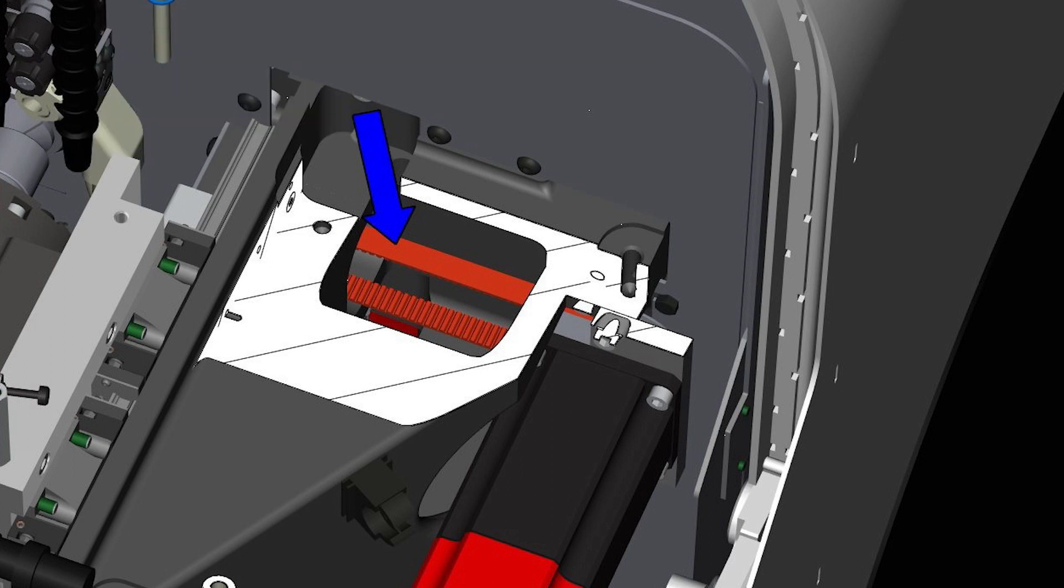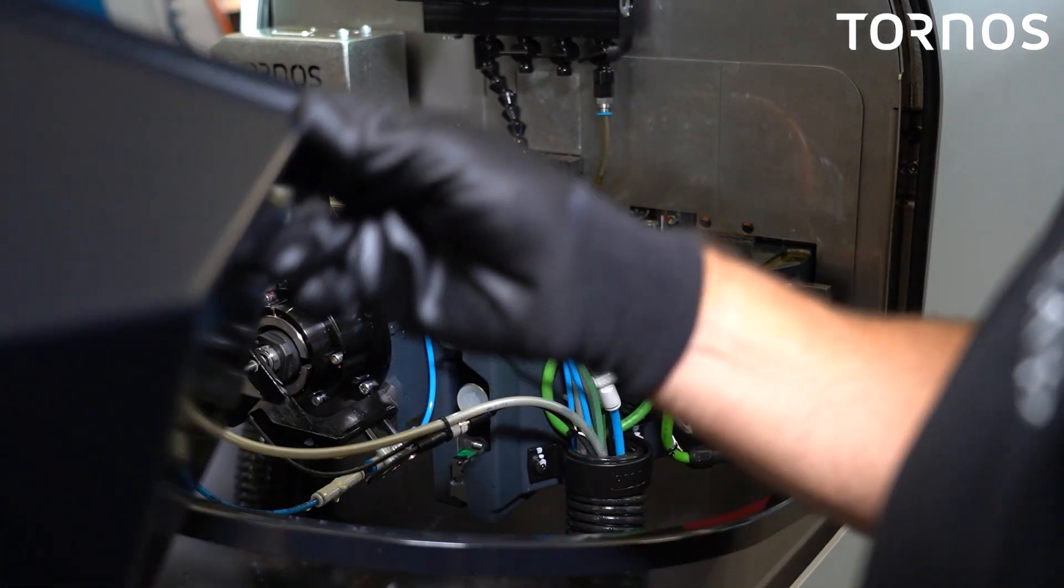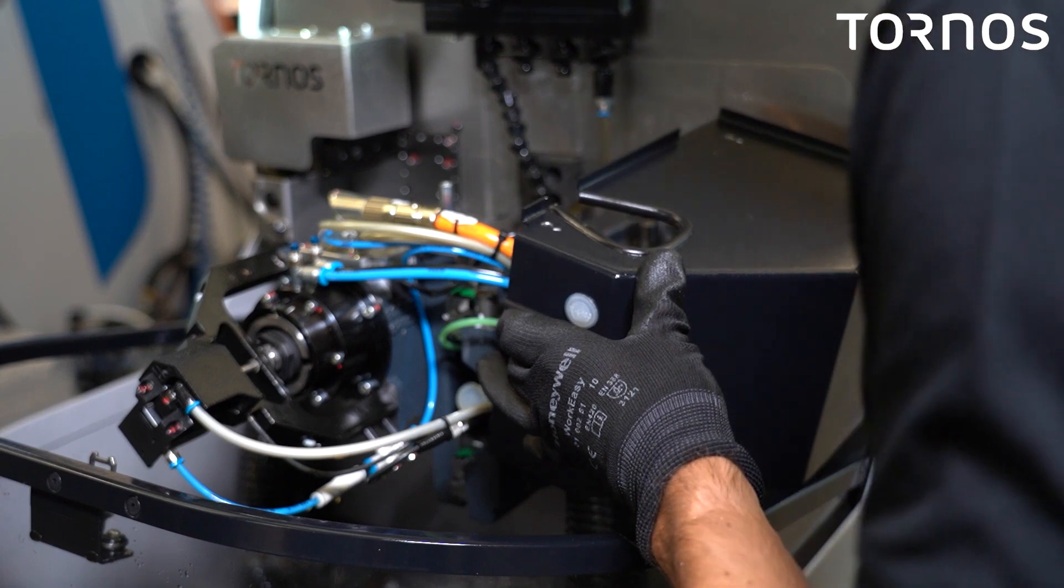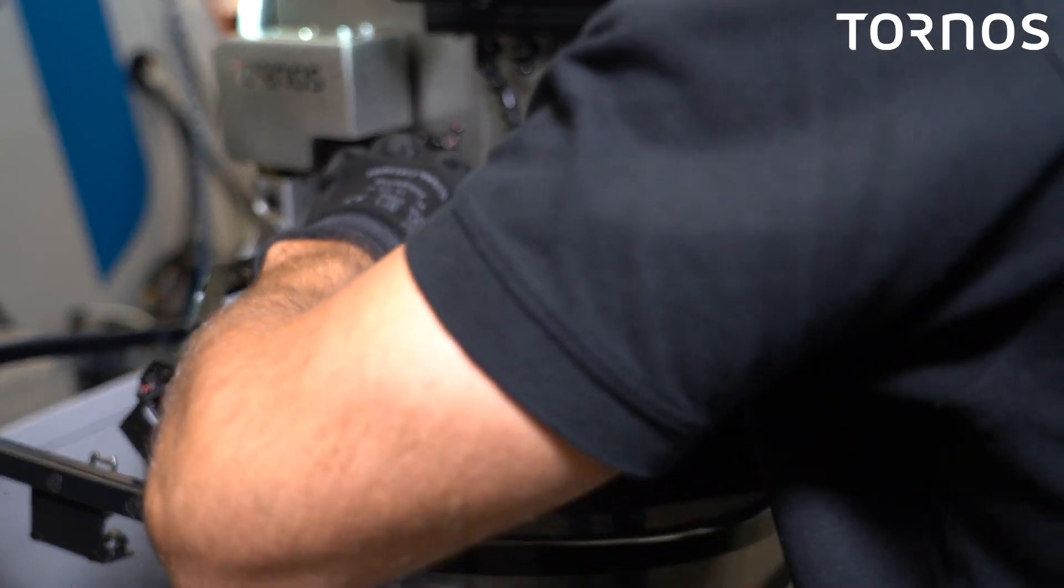If the belt is damaged or the tension is not enough, you will need to call your Tornos representative and ask for support. Otherwise, you can reinstall the metal sheet in the backward order.